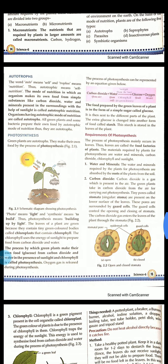Let's start with the first type of plant: autotrophs. The word 'auto' means self and 'trophs' means nutrition. So autotrophs means self-nutrition. The mode of nutrition in which an organism makes its own food from simple substances like carbon dioxide, water, and minerals present in the surroundings with the help of sunlight is called autotrophic nutrition. Organisms having autotrophic mode of nutrition are called autotrophs.